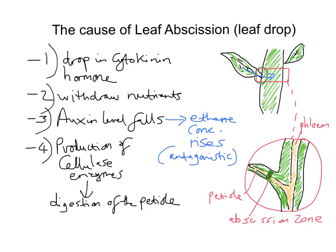Cytokinin is a hormone that prevents something called senescence — the removal of nutrients. This is what causes deciduous trees to get their autumn leaf colour. When levels of cytokinin drop, nutrients start to withdraw from the leaf back into the main phloem. Auxins have a variety of effects on plants, but in this case their function is to inhibit the production of ethene. So unless the plant needs the leaf to drop, the cellulase enzymes are not produced to digest the cells in the abscission zone.